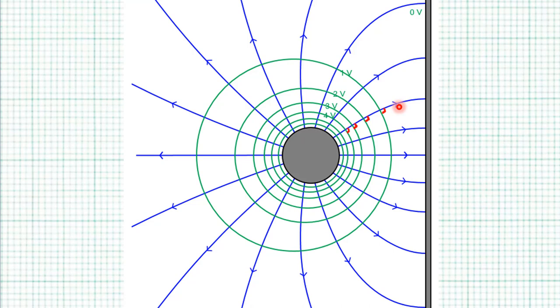If you imagine the equipotential lines to be the contour lines on geography maps, then the electric field lines will be like the tracks made by some sticky ball rolling very slowly down the slope. The track is only going to cut the contour lines perpendicularly.